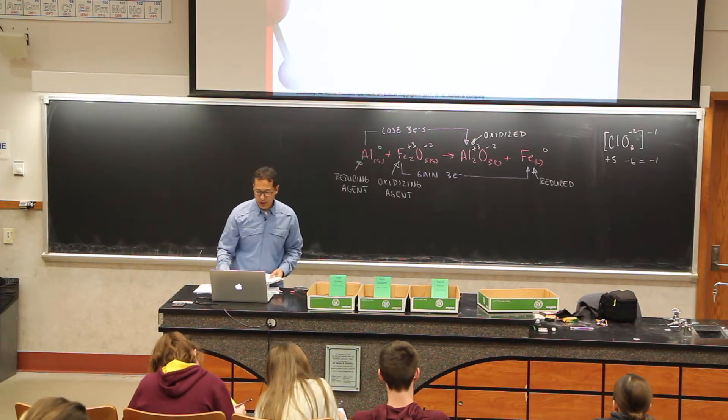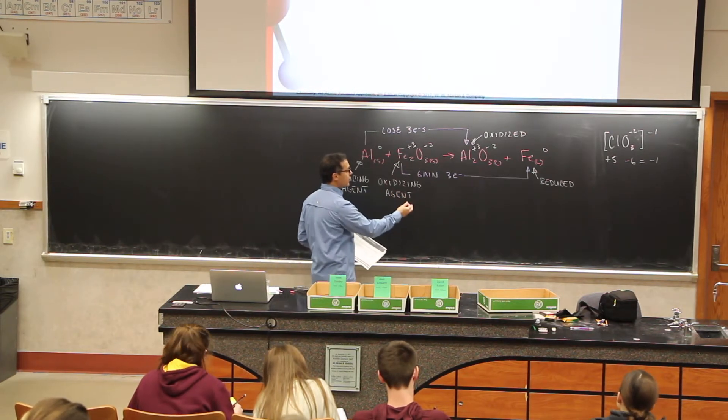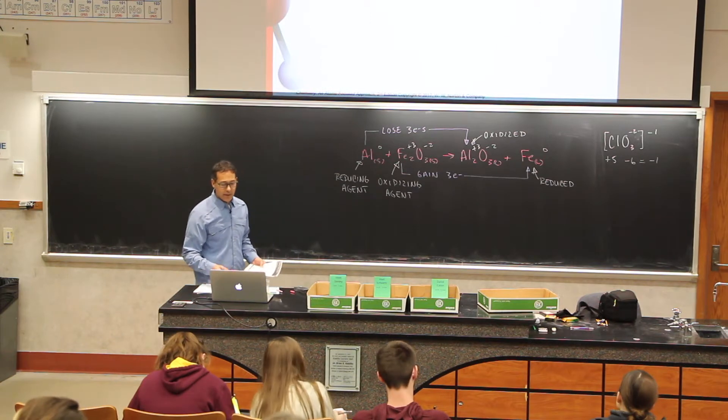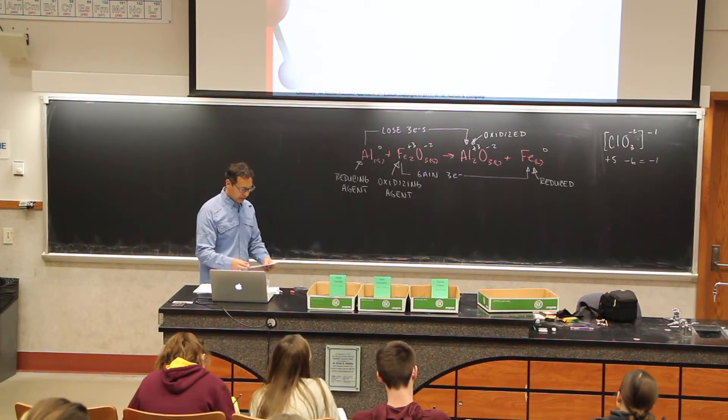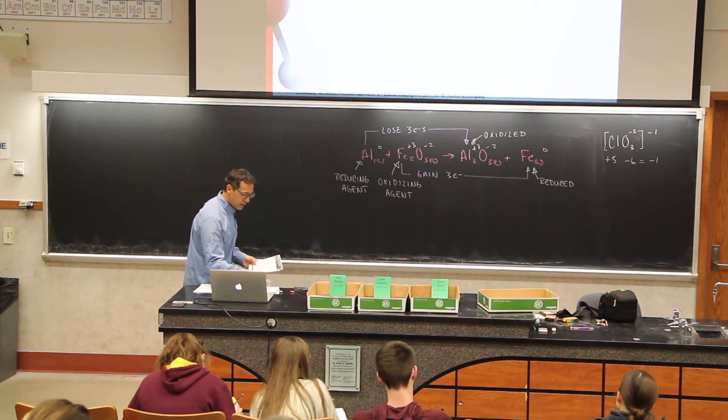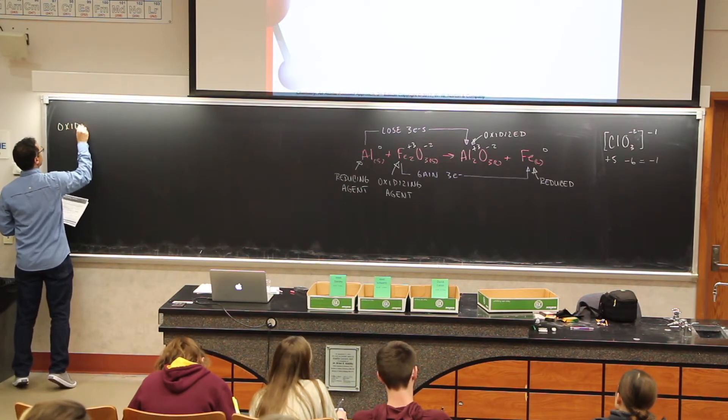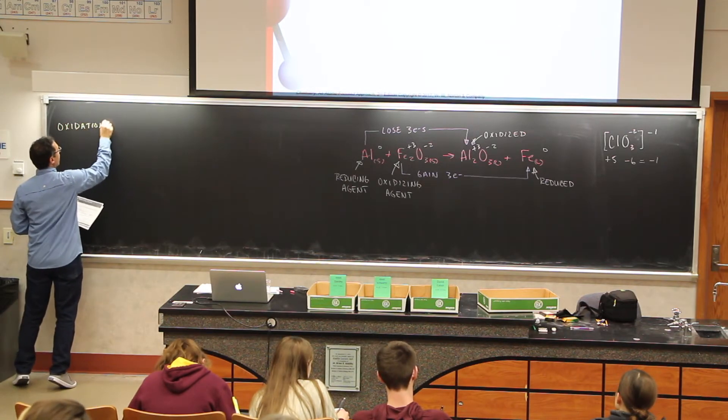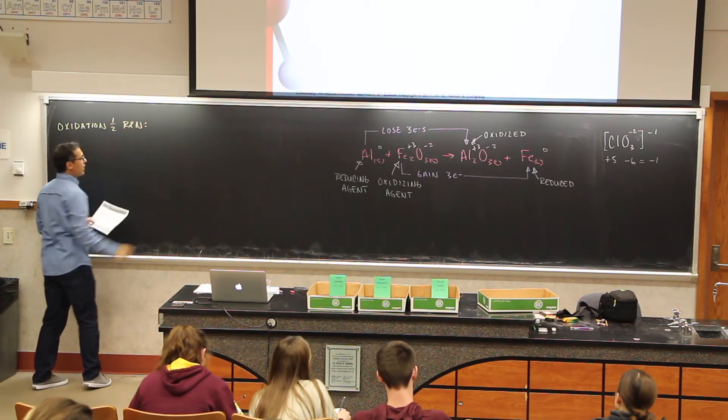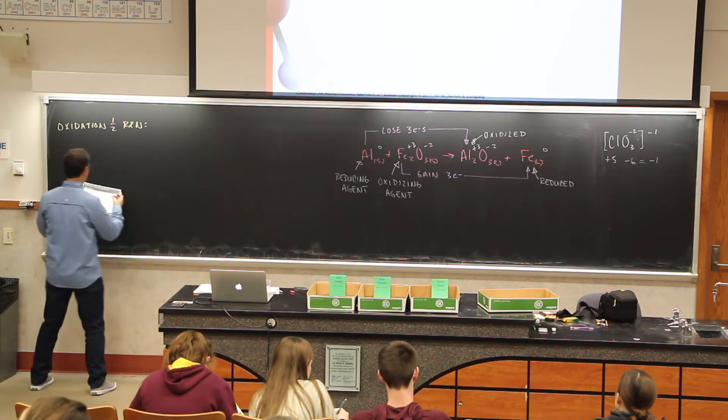Reducing agent. These are just names that we assigned to these things. Now in this reaction we can break it down into its individual elements and look at what we call the half reaction. So the half reaction is just looking at the individual parts.